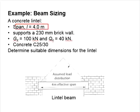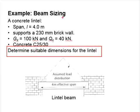Its effective length is 4 m. The GK and QK are 100 kN and 40 kN respectively. The concrete grade is 25. The question asks us to determine a suitable dimension for the lintel.